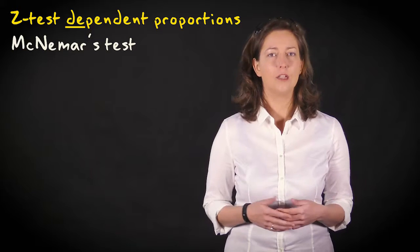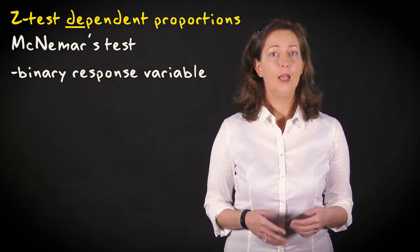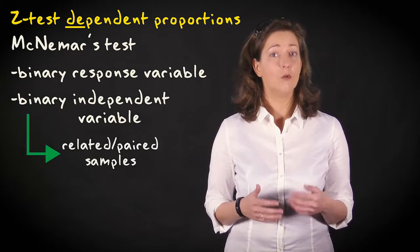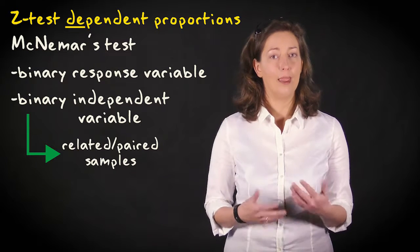We use McNemar's z-test if we have a binary response variable and a binary independent variable that distinguishes between two related or paired samples.